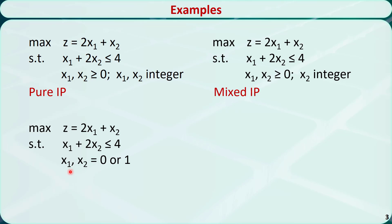This is the third example. The difference between this one and the first one is that both x1 and x2 are required to be binary — that means either 0 or 1. So it is a 0-1 integer programming problem.